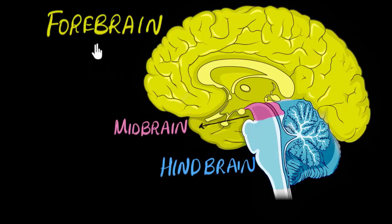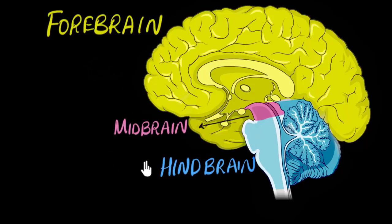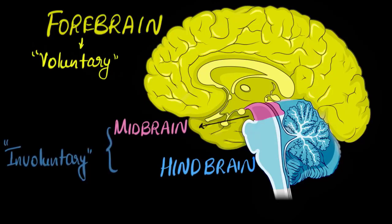So what are the functions of these parts? To get a broad sense, we can think of the forebrain as responsible for all voluntary functions, while the midbrain and hindbrain together are responsible for all the involuntary functions.